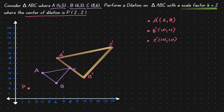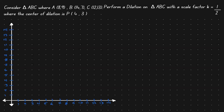Let's take a look at another example. We are given triangle A, B, C where the coordinate points are (8,9), (14,7), and (12,13). We want to perform a dilation, but now the scale factor is one-half, where the center of dilation is at (4,3). Let's place this information in our coordinate plane.